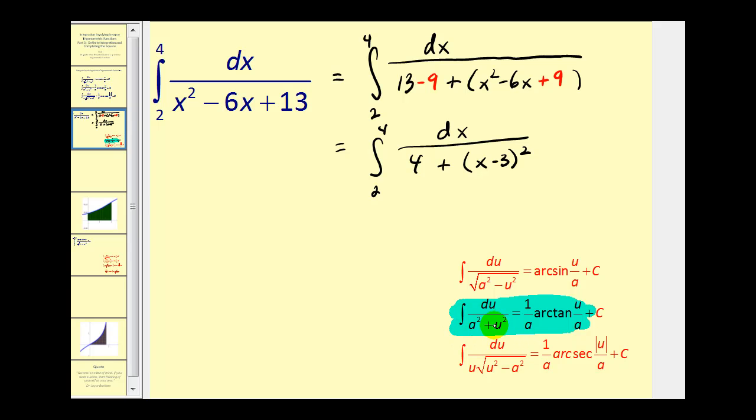Now let's go ahead and identify a and u. Well a squared is equal to 4, so a is 2. And u squared is equal to x minus 3 squared, so u is equal to x minus 3.